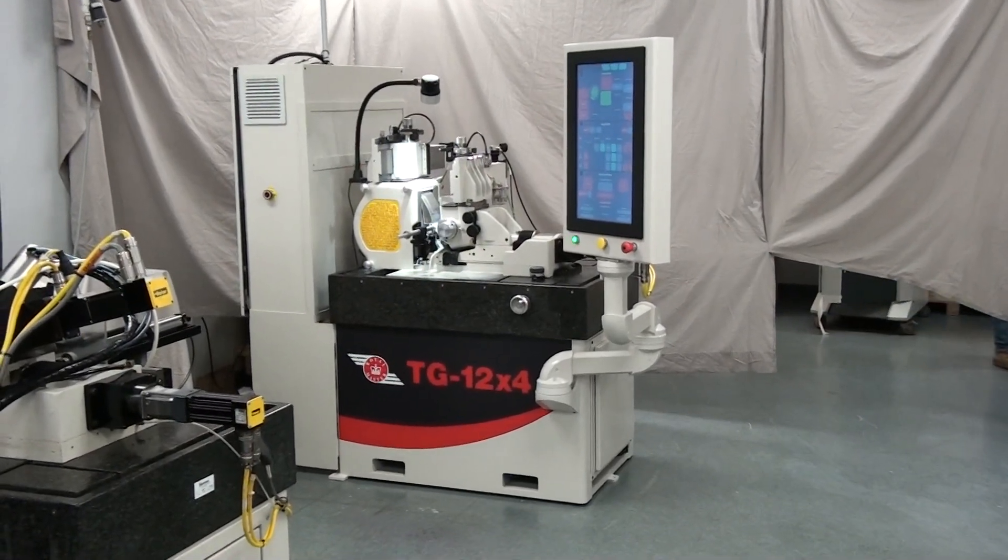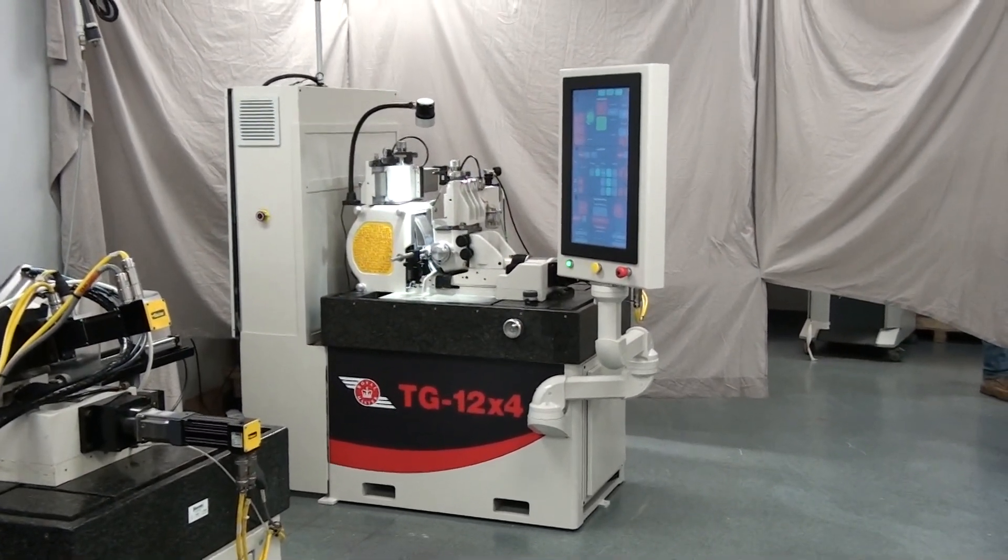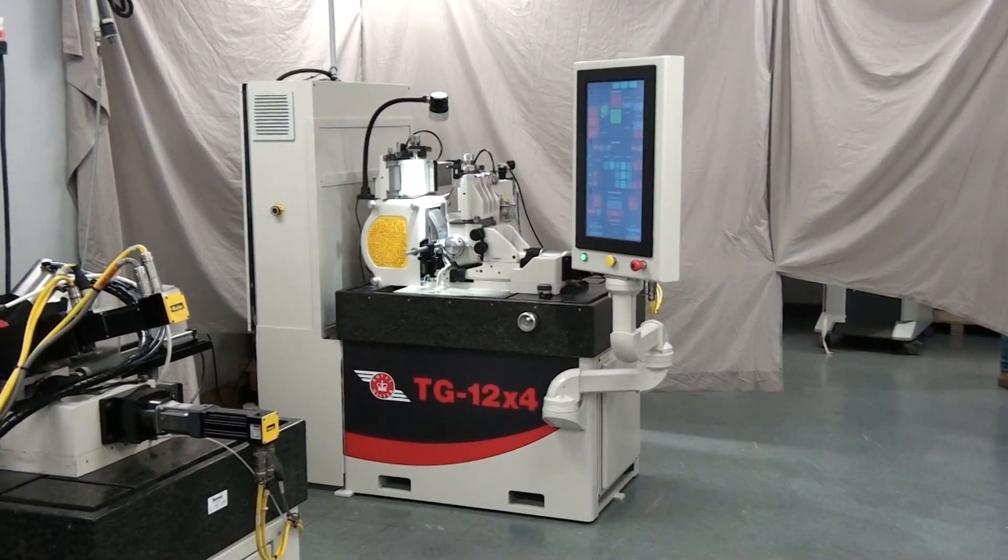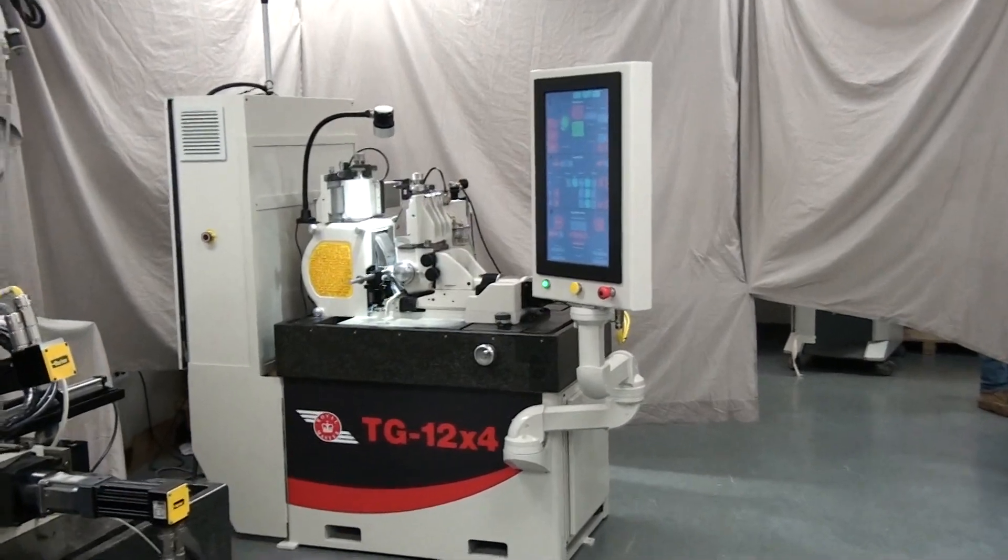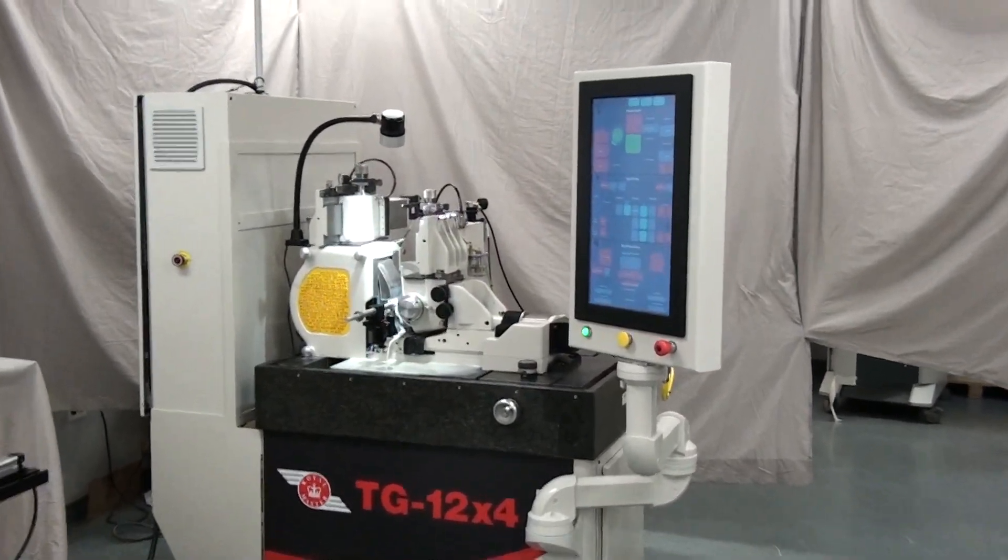This machine is the Royal Master Centerless Grinder Model TG 12x4 with high-accuracy RAM bed position control. The focus of this display is to introduce our new machine control and operator interface.